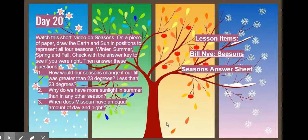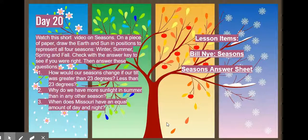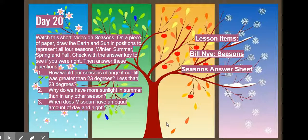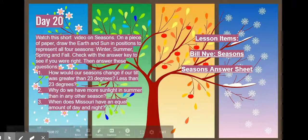Then answer the questions. Number one: how would our seasons change if our tilt was greater than 23 degrees? How about less than 23 degrees? Number two: why do we have more sunlight in summer than in any other season? And question three: when does Missouri have an equal amount of day and night?